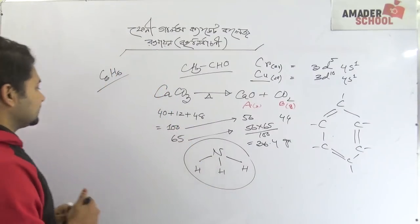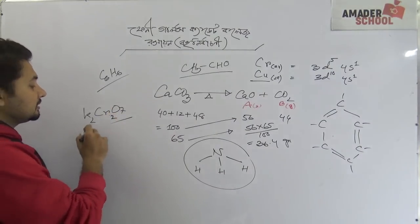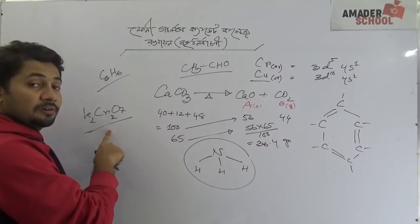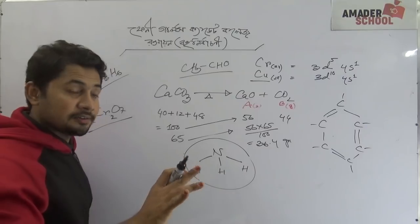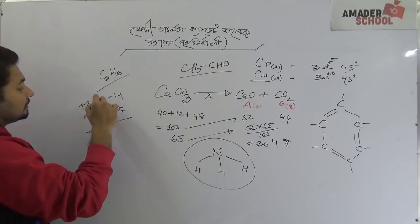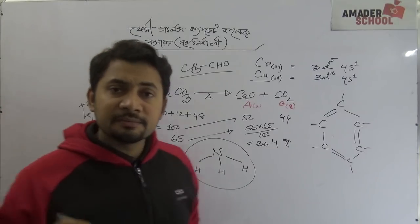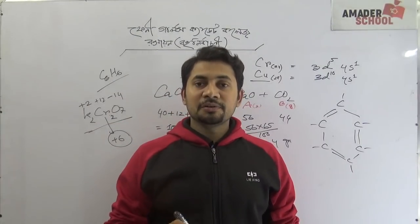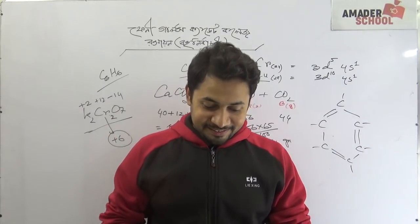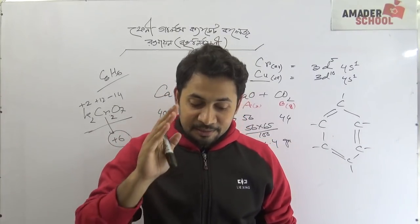K2Cr2O7 — this is very common. K2Cr2O7 is potassium dichromate. The sodium dichromate looks like potassium dichromate. This is an error in the argument.